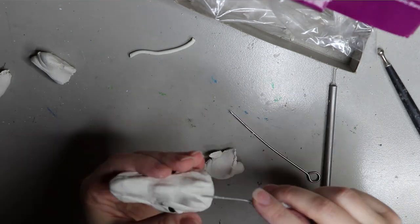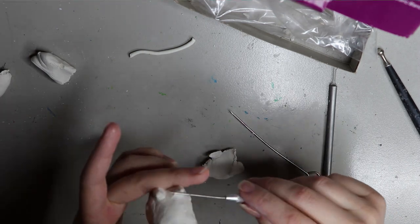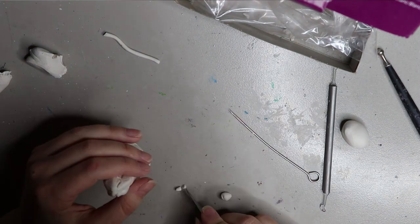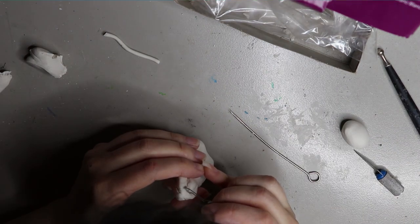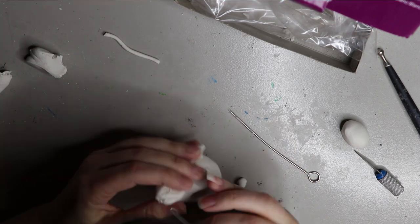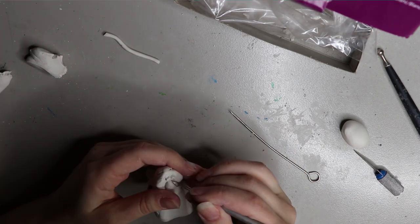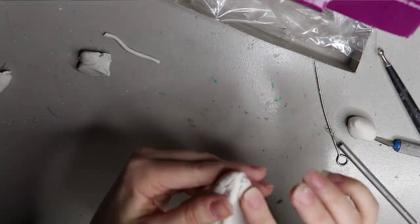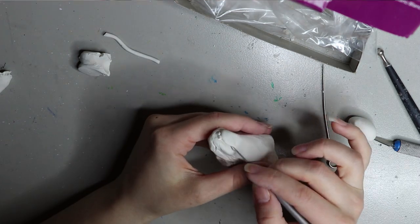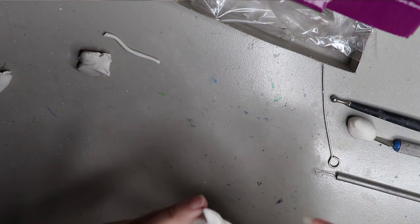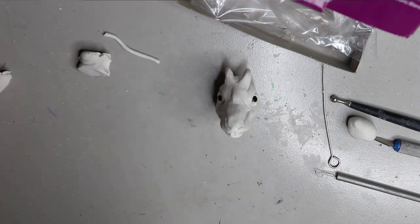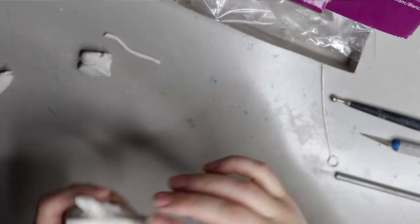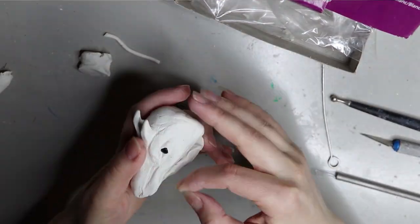In the meantime, I sculpted out some of the nostrils with a little pick tool, which is really handy. Then I'm adding in these tiny little teeth. In a couple of reference photos I had, I saw that Okapi's teeth kind of stick out a little bit, so I wanted to capture that. I added two little front teeth—something I didn't know until I looked at reference pictures.